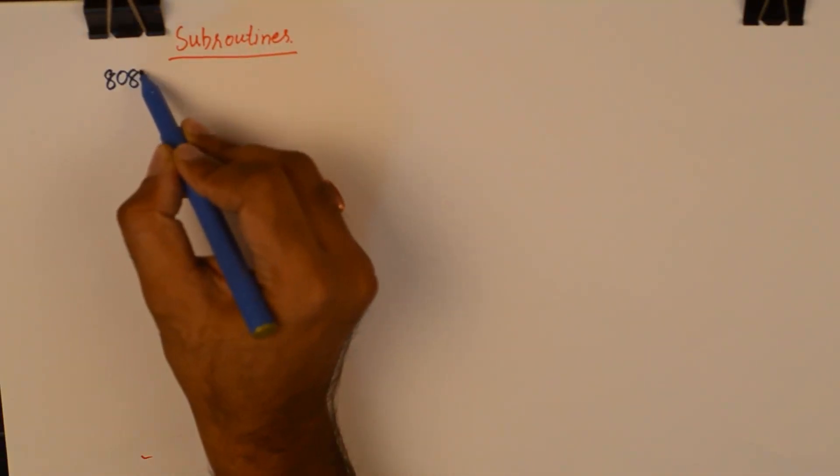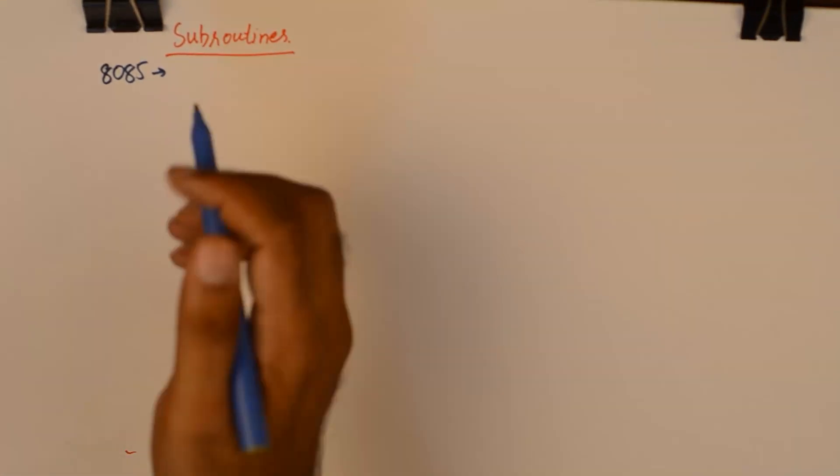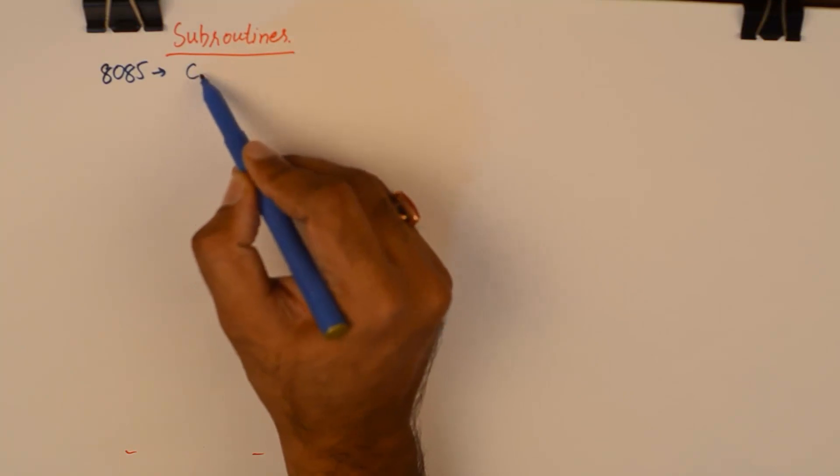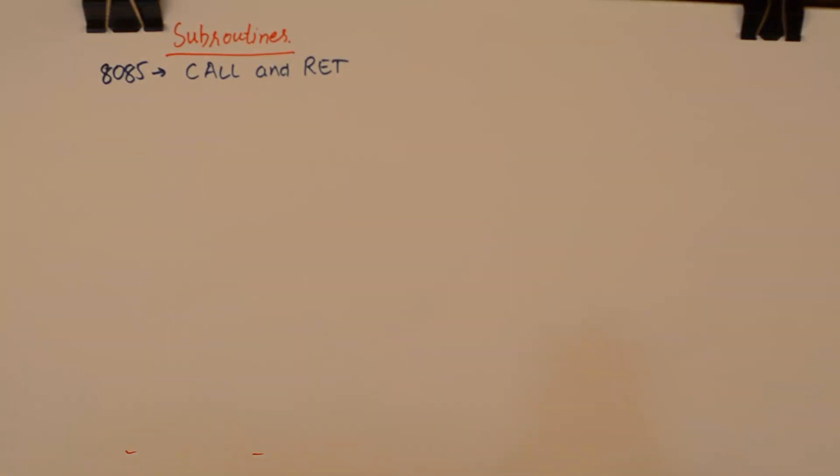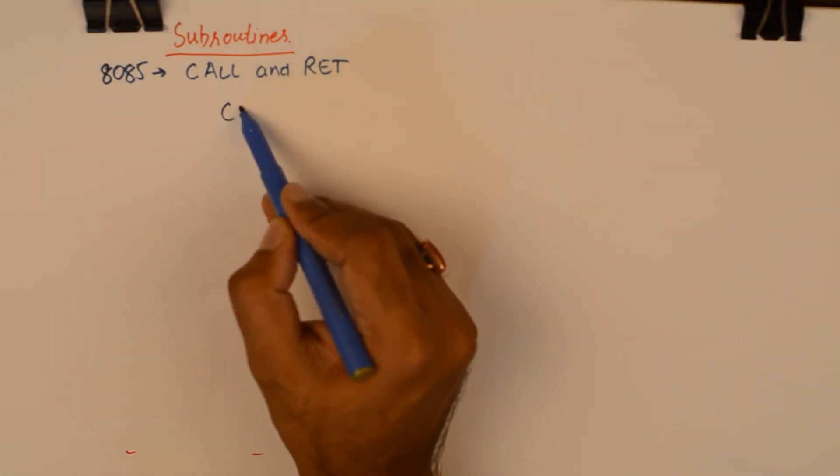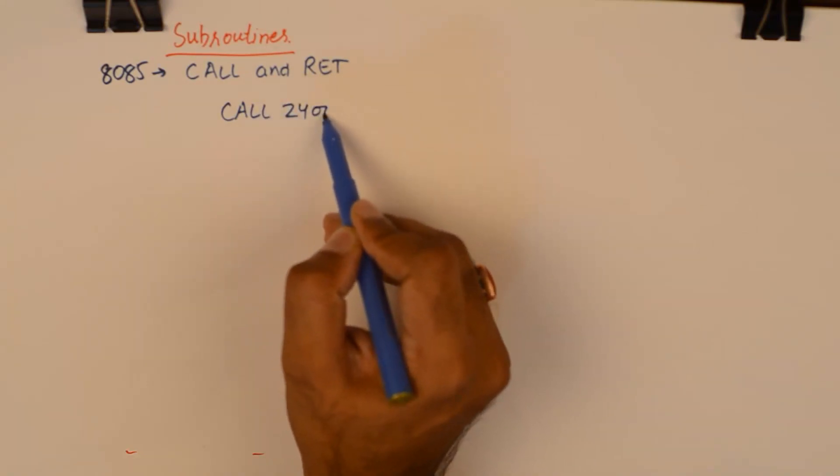But in context with 8085, how do we study the flow of execution of subroutines is what we are focusing today. So in context with 8085, subroutines are executed using call and return instruction. Now please understand that call instruction is like a branch instruction. The format of the call instruction is something like call 2400H.